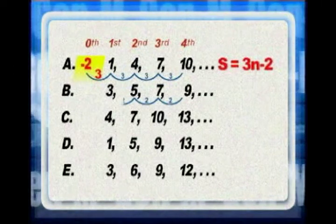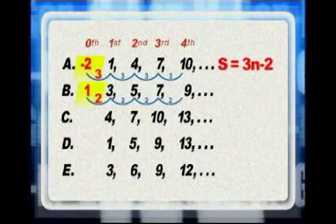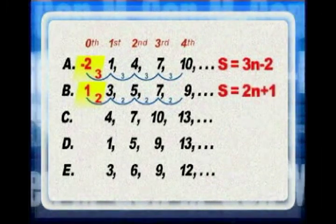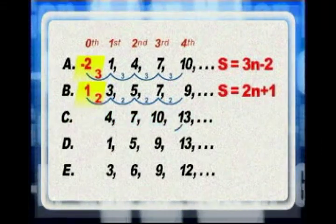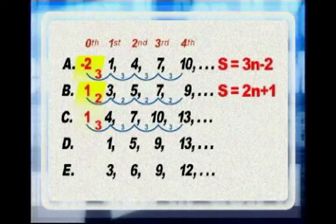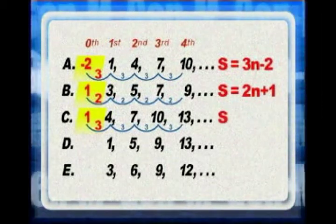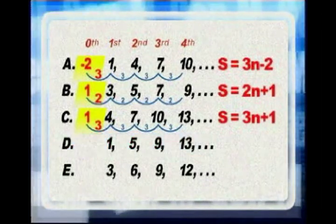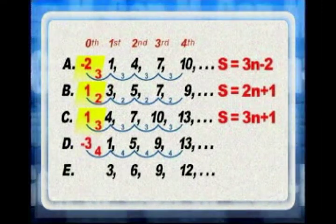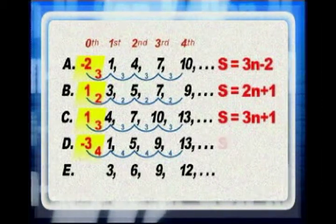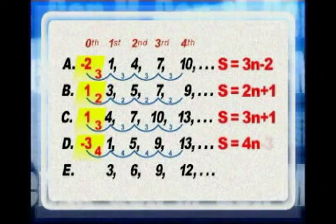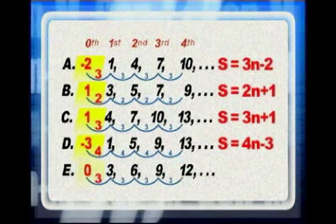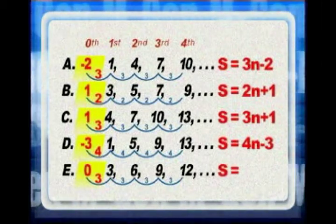The zeroth figure of B is 1 using a constant difference of 2. So, S is equal to 2N plus 1. The zeroth figure of C is 1 using a constant difference of 3. So, S is equal to 3N plus 1. The zeroth figure of D is negative 3 using a constant difference of 4. So, S is equal to 4N minus 3. The zeroth figure of E is 0 using a constant difference of 3. So, S is equal to 3N.